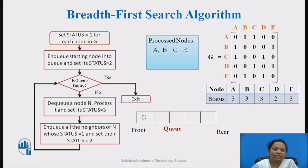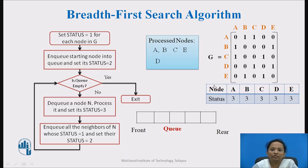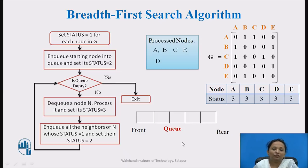Now we check: is the queue empty? No, D is still in the queue. We dequeue D, mark it as processed with status 3. We check D's neighboring nodes — that is C and E — but both are already marked as processed with status 3. So there are no further nodes to enqueue. We check again: is the queue empty? Yes. So we stop. All nodes are processed. The graph traversal sequence for graph G is: A, B, C, E, D.